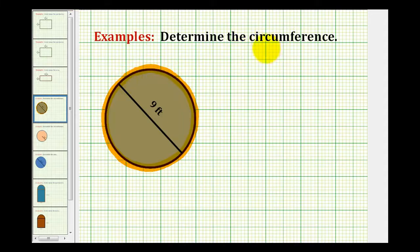There are two formulas that can be used to determine the circumference of a circle. We have the circumference is equal to pi times d, where d is the diameter of the circle, and we can also use two times pi times r, where r is the radius of the circle.